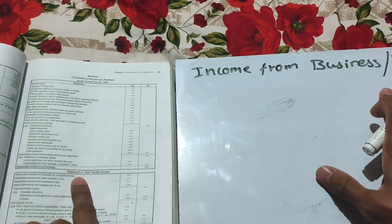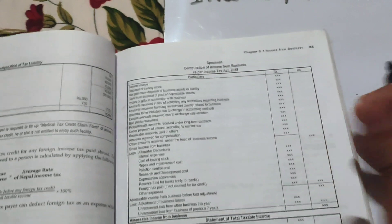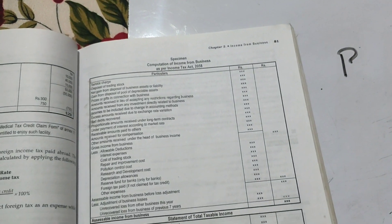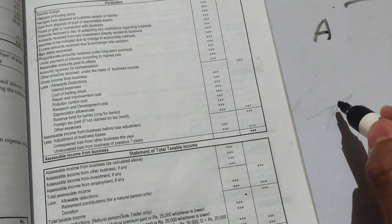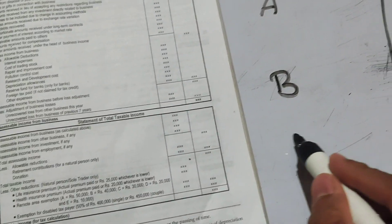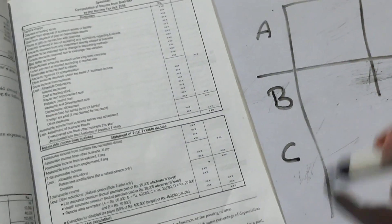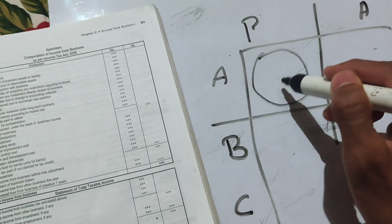At the start, this chapter follows a specific format. The format contains particulars and amount columns. There are no specific other formats — under particulars, everything is divided into three sections: Section A, Section B, and Section C. First, we look at what income comes under business income or profession income.